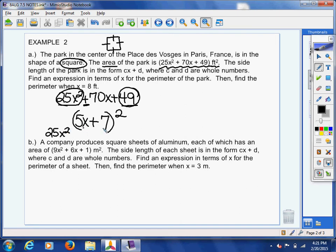5x times 7. That's 35x. Double that. That's 70x. And then square the 7. That's 49. So, yeah. I know for a fact that I factored this correctly because I checked it.